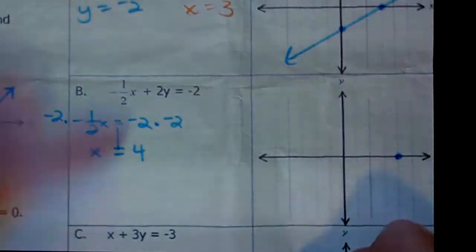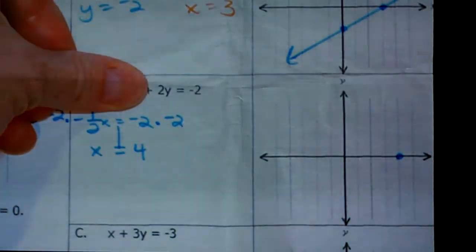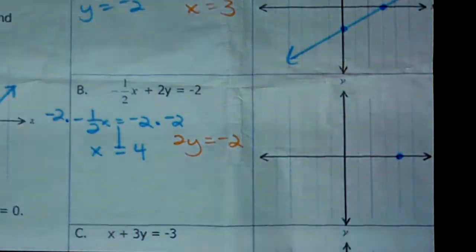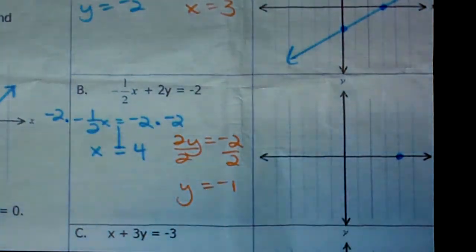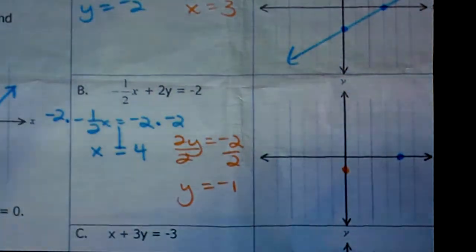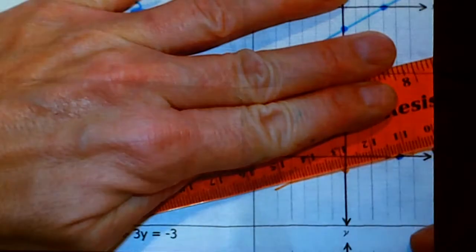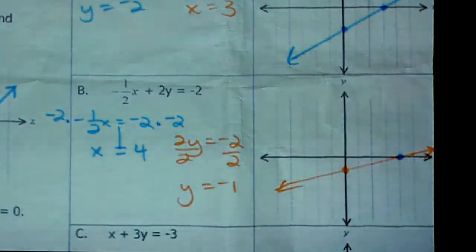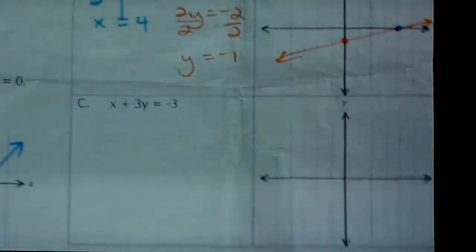To find the y-intercept, I'm going to cover up the x or plug 0 in for x and I'm left with 2y equals negative 2. All I need to do now is solve for y. I'll divide by 2, and y is negative 1. So I'll plot my negative 1. I'm going to grab my ruler, connect the lines. And there are all the solutions to that equation. Alright, last one on this side. Yes, there's another page.